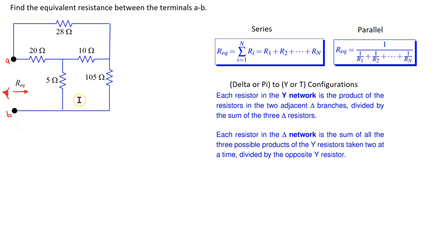In this original circuit, none of the resistors are directly in series or parallel, so we cannot use these relationships to simplify the resistors. Instead, we can recognize these three resistors as a T or a Y network, and we can apply a Y-to-delta transformation to help find the equivalent resistance.